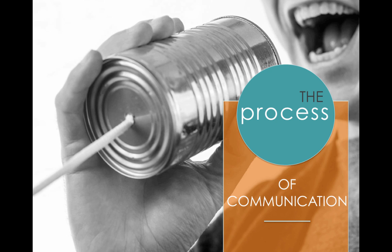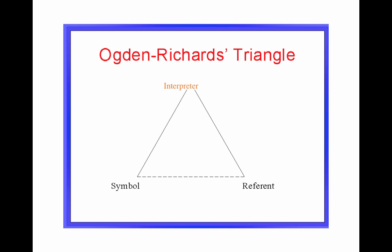So we can understand what communication is, but how does it work? That leads us to the process of communication, starting with Ogden and Richards' triangle of meaning. These two communication scholars came up with three variables that occur during communication: the interpreter, the symbol, and the referent. The interpreter is just the speaker or the listener. A symbol is something we attach meaning to, like a word. And a referent is the meaning that we assign to that symbol.